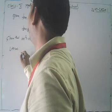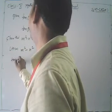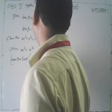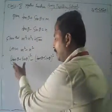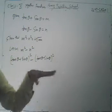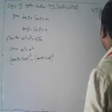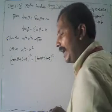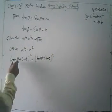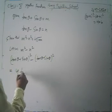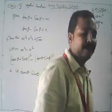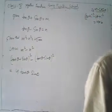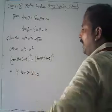Take the left hand side: m² − n² = (tan θ + sin θ)² − (tan θ − sin θ)². Using the algebraic identity (a+b)² − (a−b)² = 4ab, where a = tan θ and b = sin θ, we directly get 4 · tan θ · sin θ.